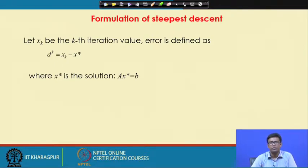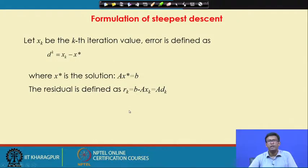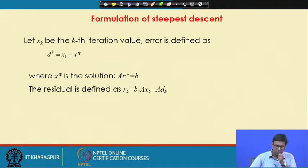Let x* be the point where j is minimal, and d_k is the error, meaning x_k minus x*. The residual is defined as r_k = b minus A x_k. If x_k equals x*, then b minus Ax equals 0, so the residual is 0. Until that is reached, the residual is nonzero, and we define it as b minus A x_k, which equals negative A times d_k.